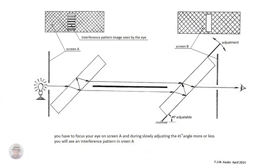First we need a light beam splitter. This shows you my solution of how to split a light beam into two light beams and back to one. If adjusted well and you focus on the window in screen A, then you will see an interference pattern in that window. See the link below if you want more information about this light beam splitter.